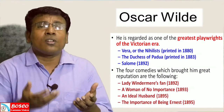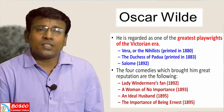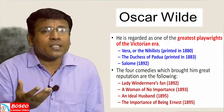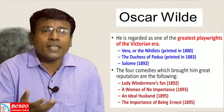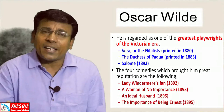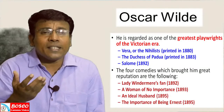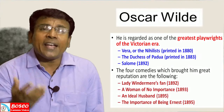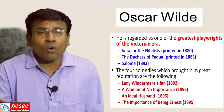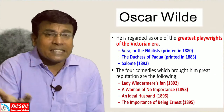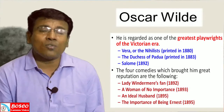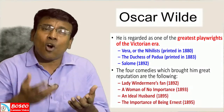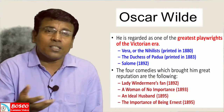Oscar Wilde is renowned for four great comedies that brought him considerable reputation. The first was Lady Windermere's Fan, published in 1892. In 1893, he published A Woman of No Importance. In 1895, he published An Ideal Husband. And the most important and best of them all, The Importance of Being Earnest, was also published in 1895. All four comedies are very popular and belong to the genre of the comedy of manners.